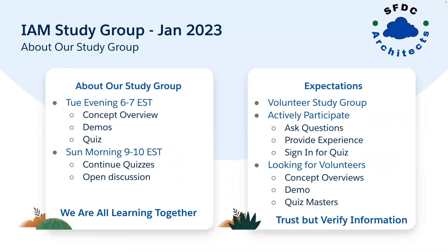So let's talk about our study group. We'll be meeting Tuesday evenings for concept overviews, demos, and quizzes, and then Sundays 9 to 10, completely optional, for open discussion and anything anybody wants to share. This is a volunteer study group and I am learning along with you, so please make sure you're actively participating. I want your questions and your experiences. We'll have a quiz — you'll be able to see how you score — and even though we don't have anything to give away, it'll be nice to see who gets the answers.